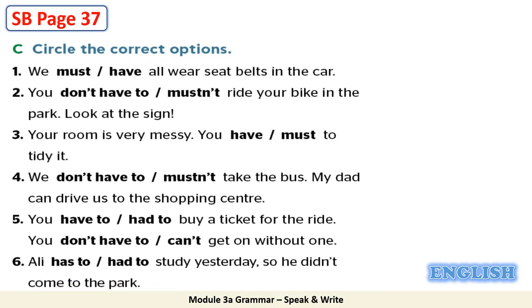Now let's move to exercise C. Read the given instructions: C. Circle the correct options. Here you have six sentences. Read each sentence and circle the correct option.